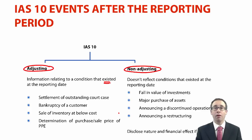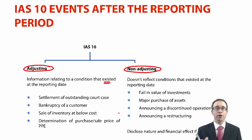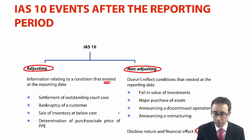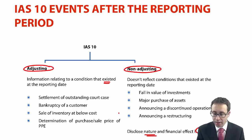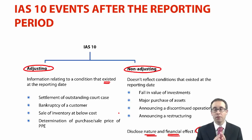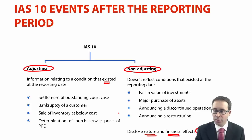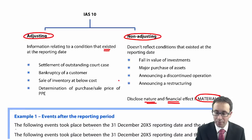An important point to note is that non-adjusting events will be disclosed if they are material. You can pick up bonus marks by stating the nature — what specifically happened and when — and also any financial effect. As you go along, you can add to your list of adjusting and non-adjusting events, and we may be able to do that as we work through the following example.